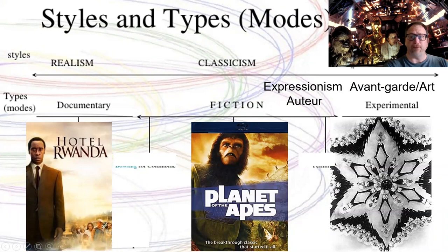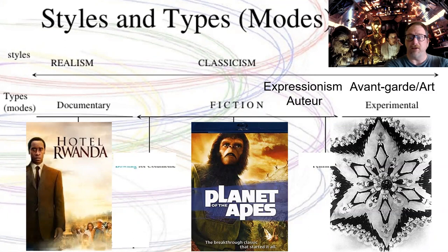Note there are two stops between classicism and formalism or avant-garde films. One of them is expressionism — dark, gothic themes, very angular components. It started in Germany in the 1920s. Our most common individual that does it, at least in some styles of his films, is Tim Burton. The other, not to be confused, is auteur, which is a little bit past classicism on its way to formalism but much more in the classical side.